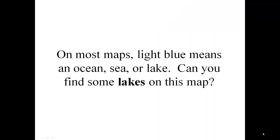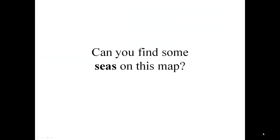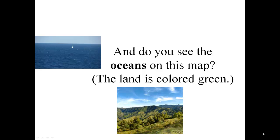On most maps, light blue means an ocean, sea, or lake. Can you find some lakes on this map? Can you find some seas? And do you see the oceans on this map? The land is colored green.